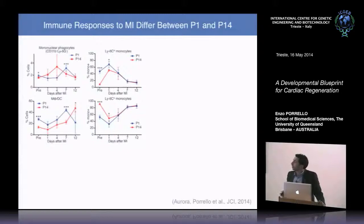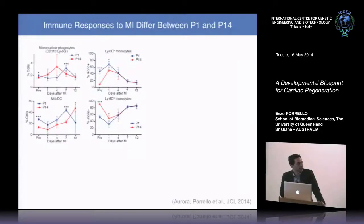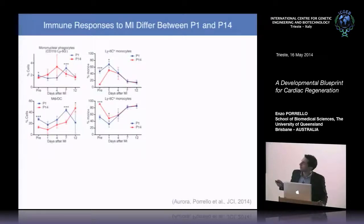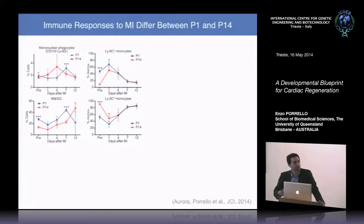We recently published on differences in the immune response between the one-day-old and 14-day-old heart following infarction. Quantification of mononuclear and macrophage populations — including mononuclear phagocytes, LY6C-high and low monocytes, and macrophages/dendritic cells — shows differences in both magnitude and kinetics of inflammatory cell infiltration at these two developmental stages.